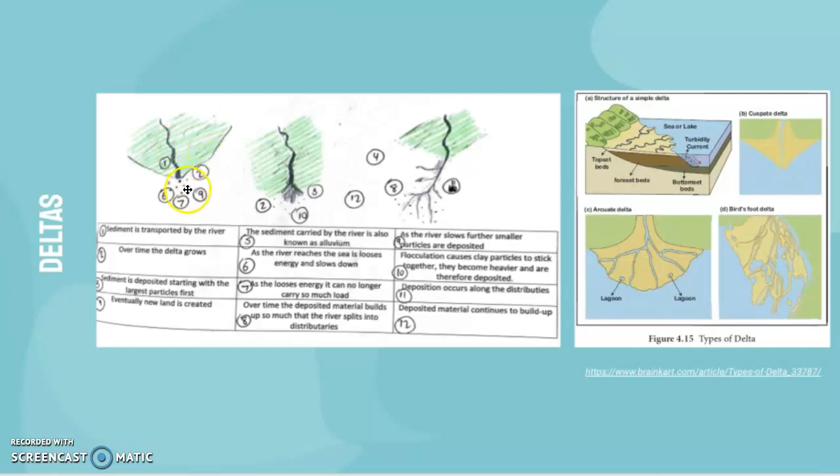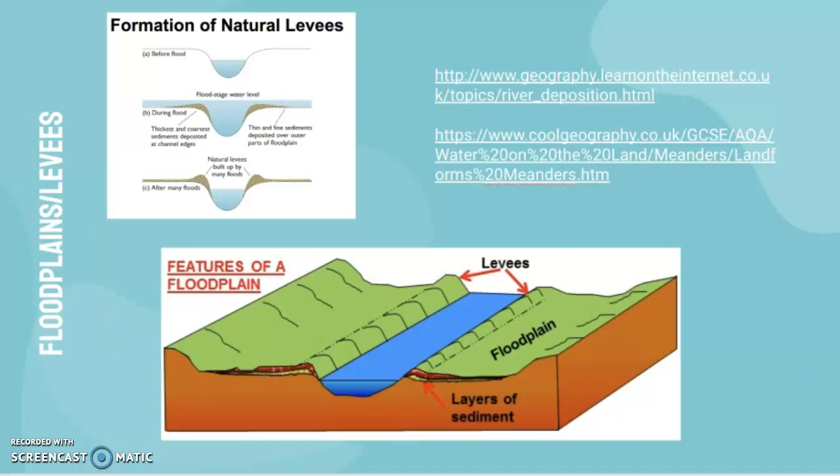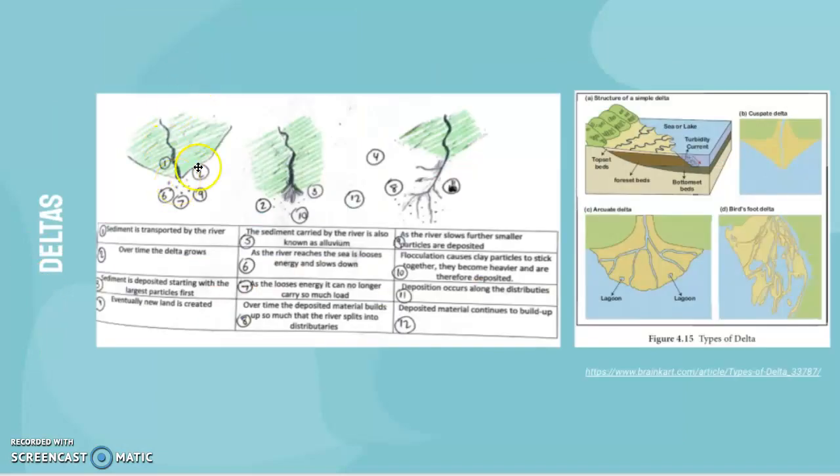The delta begins to grow because of the sediment being deposited. The largest particles are deposited first, similar to the formation of a levee, then the finer sediments. That creates this new land. The sediment carried by the river is known as alluvium, and this alluvium is actually a rich source of fertile soil for agriculture, so deltas are often areas of agriculture such as on the Nile.